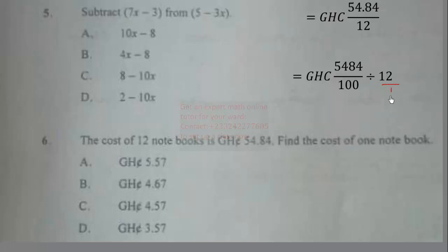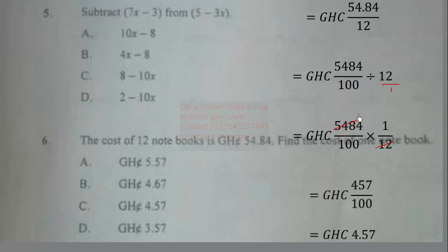We get 5484/100 × 1/12. Using long division, dividing 5484 by 12 gives 457, so 457/100 = 4.57. The correct answer is option C.